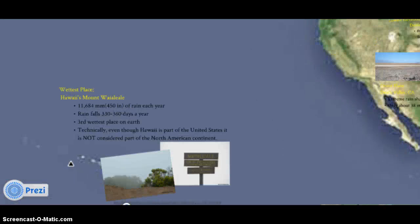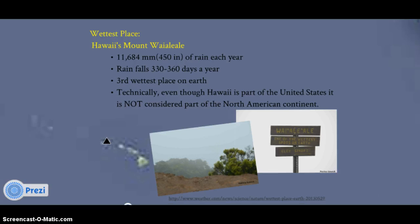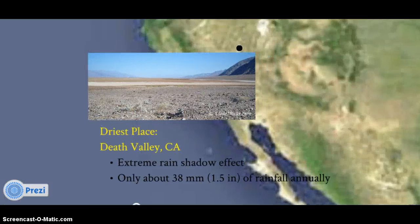Did you know? The wettest place in North America is Hawaii's Mount Waialeale, which receives 11,684 millimeters or over 450 inches of rain a year — rain falls there nearly every day, spanning 330 to 360 days a year. And technically, even though Hawaii is part of the United States, it's not considered part of the North American continent, but we included it anyway. The driest place is Death Valley in California, where the extreme rain shadow effect of the Sierra Nevada mountain range accounts for only about 38 millimeters of annual rainfall.